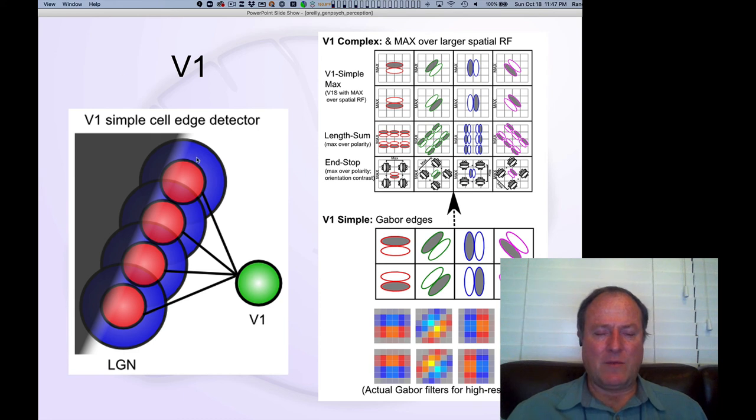They basically shined different stimuli and recorded neurons in cats, and they found that in fact these little oriented edges of light and dark were actually what activated the neurons in this primary visual cortex area. And this is how it works - you have essentially a lineup of all the on-center parts.